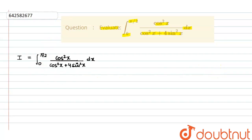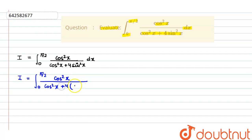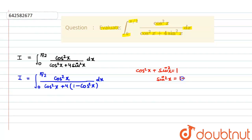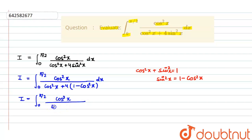For the given question, let I = ∫₀^(π/2) cos²x / (cos²x + 4sin²x) dx. I will split the given function. In the numerator I am not doing anything, but in the denominator I replace sin²x with (1 - cos²x) using the identity cos²x + sin²x = 1. Opening the bracket and multiplying by 4 gives the denominator as 4 - 3cos²x.